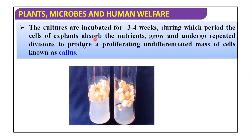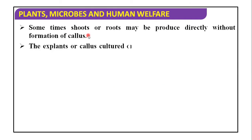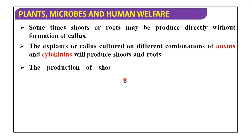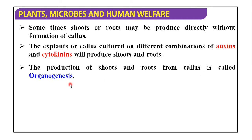That proliferating undifferentiated mass of cells is known as callus. Proliferating means spreading. This is the callus on the nutrient medium. Sometimes shoot or roots may be produced directly without formation of callus. The explant or callus cultured with a different combination of auxin and cytokinin will produce shoot and root. The production of shoot and root from callus is known as organogenesis, as these are organs of the plant.